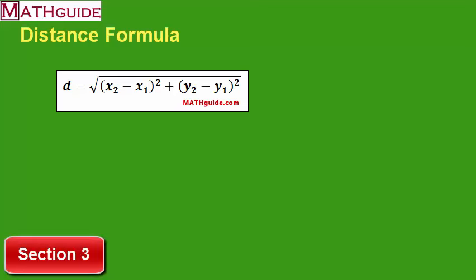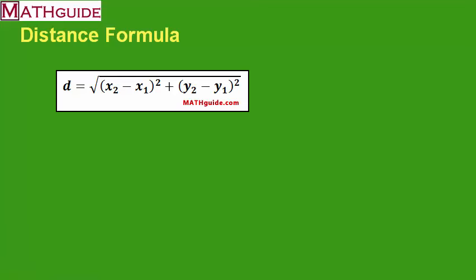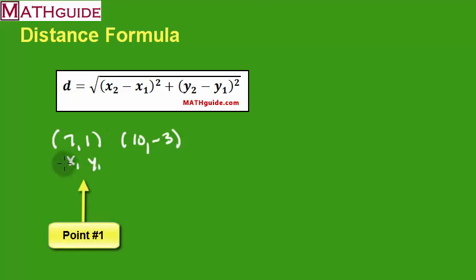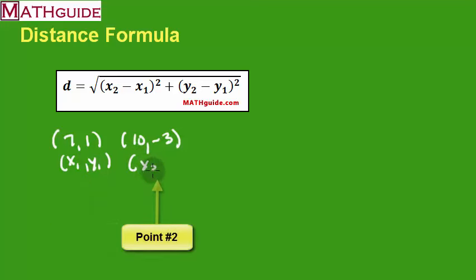This is our third section. Now we'd like to actually calculate the distance between two points. So let's say we are given two points and we'll calculate the distance between them. Some people draw a picture while doing this, but I'm just going to show you how to plug the values into the formula. First you have to decide which point is your first point and which is your second — and it really doesn't matter. I'm just going to take them in order: this will be our first point, so x1, y1, and this will be our second point, x2, y2.